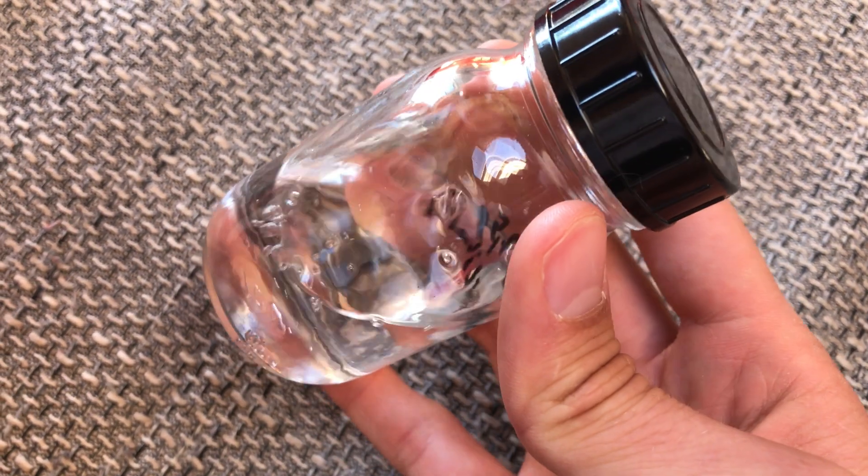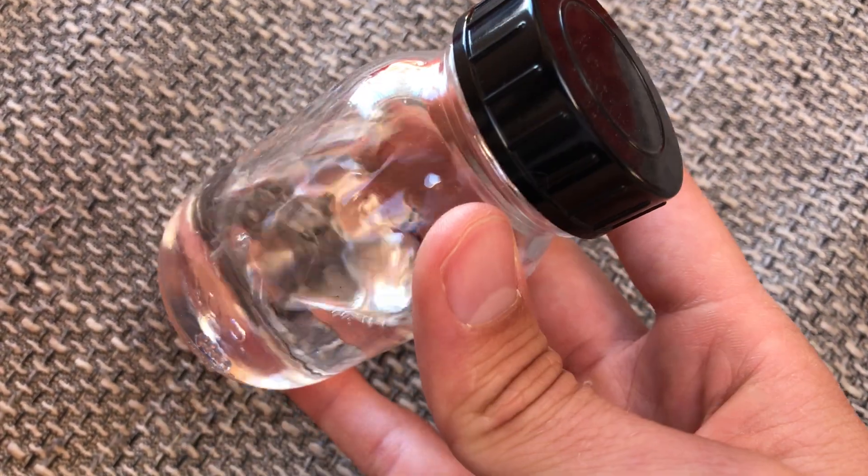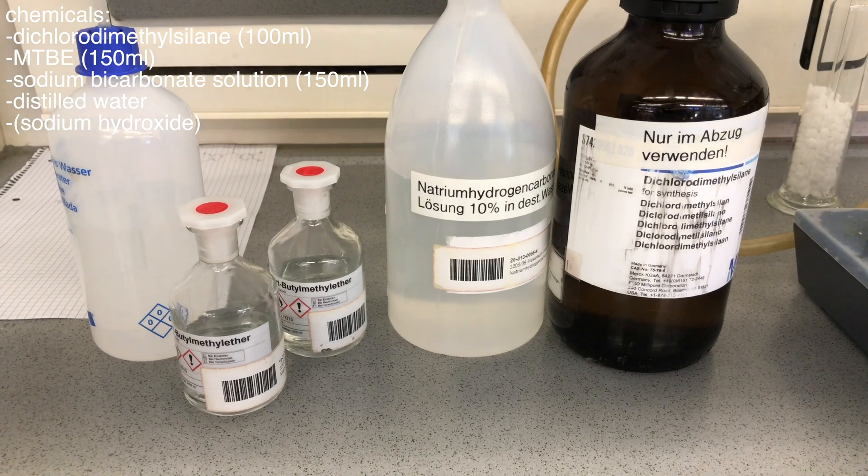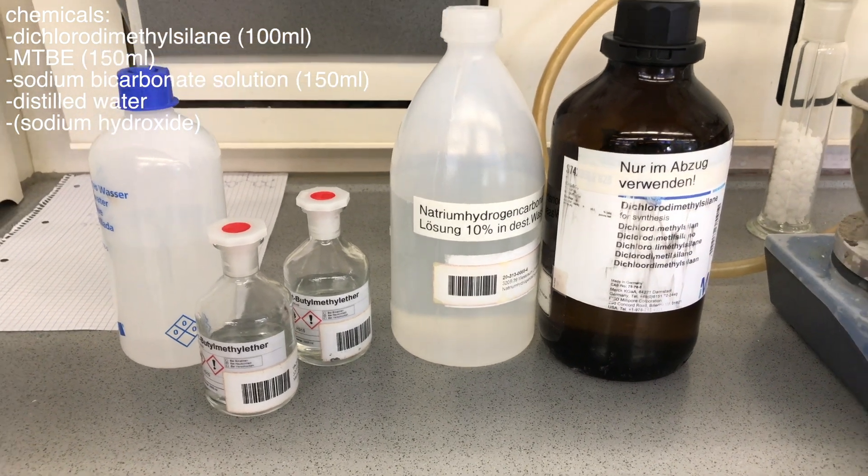This is silicon oil and today I am going to show you how to make this stuff. The following chemicals with dichlorodimethylsilane and distilled water being the most important ones are needed.